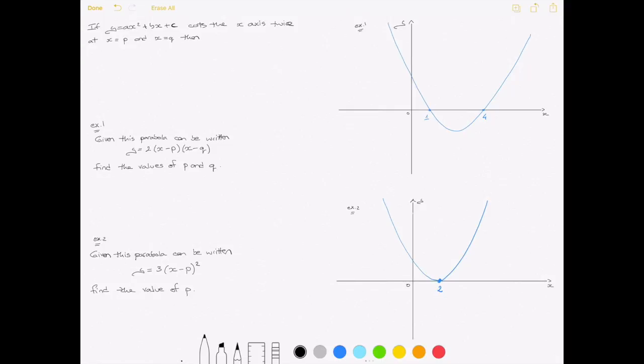Then we can write the parabola's equation as y equals a times x minus p times x minus q.